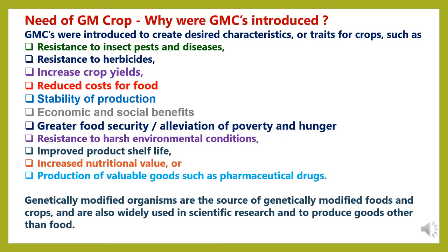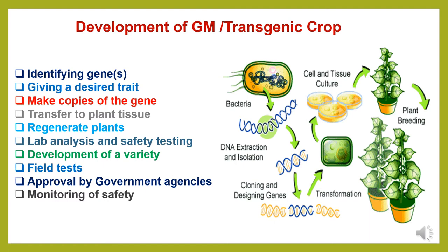Genetically modified organisms are the source of genetically modified foods and crops and are also widely used in scientific research and to produce goods other than food. There are various processes in the development of transgenic crops to be followed: identifying the genes, inserting the desired characteristics, giving a desired trait, making copies of the gene, transferring to the plant tissues, regenerating plants, lab analysis and safety testing for adaptability, development of a variety, field tests, approval by government agencies, and monitoring of safety measures.